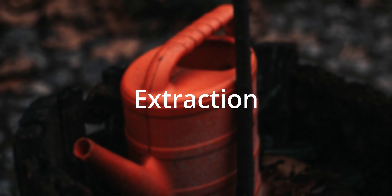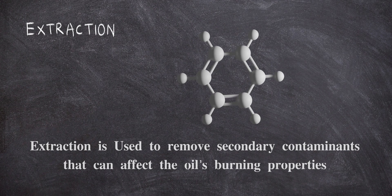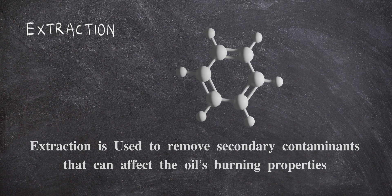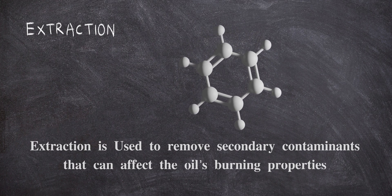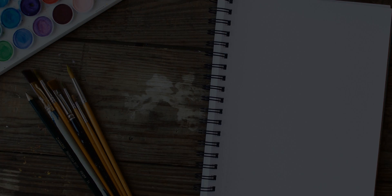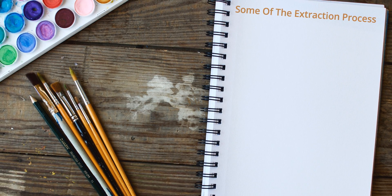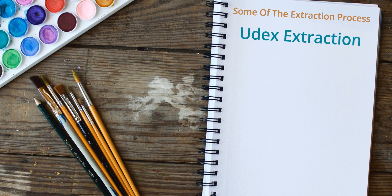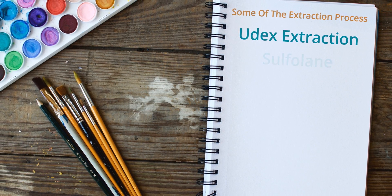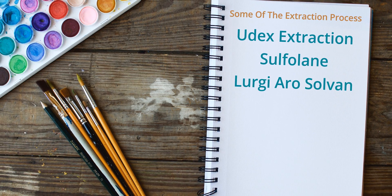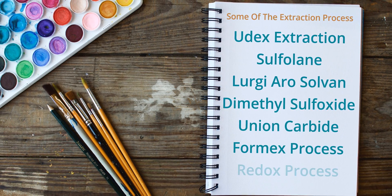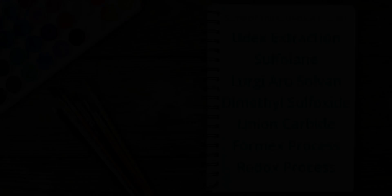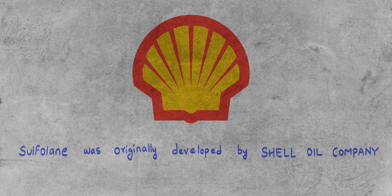Once the kerosene has been reacted, additional extraction is required to remove secondary contaminants that can affect the oil's burning properties. For example, aromatic compounds such as benzene are one class of contaminant that must be removed. The following extraction techniques are used to purify kerosene: the Udex extraction process, the Sulfolane process, the Lurgi Aerosolvent process, the dimethyl sulfoxide process, and others.